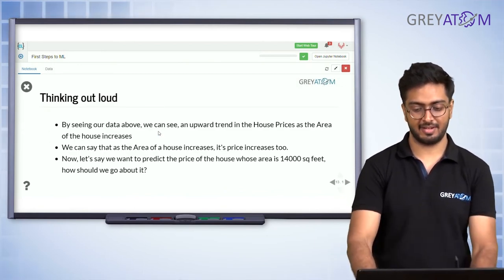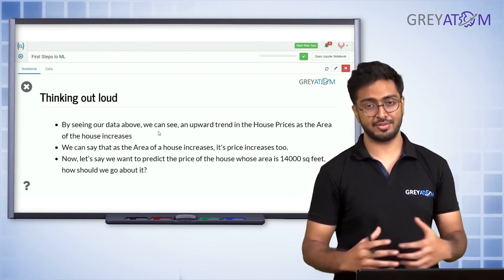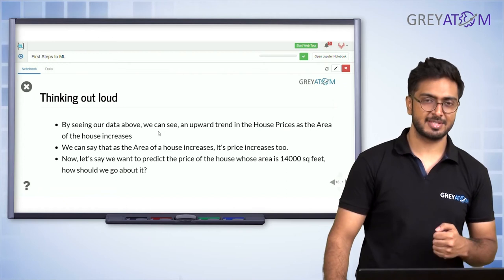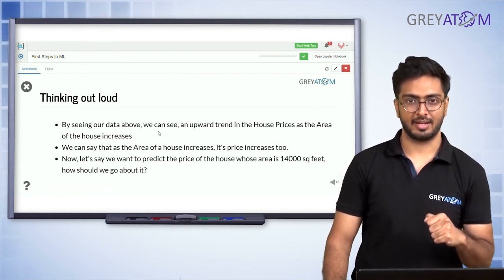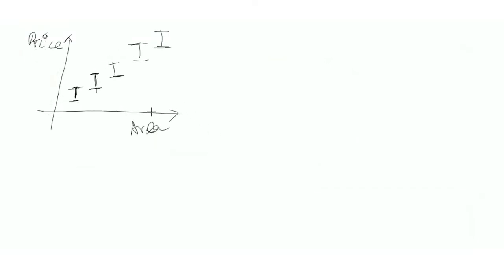Let's say we want to predict the price of a house whose area is 14,000 square feet. There are two options for John. One easy way: look at this particular area of 14,000 on the plot, see what range the prices fluctuate in, and then take a mean or median of the houses at that area to predict the price — maybe there are five houses around 14,000 square feet.